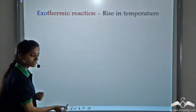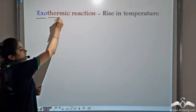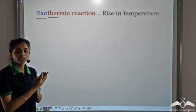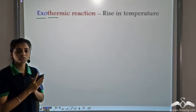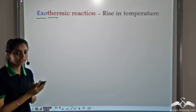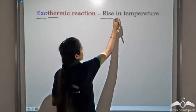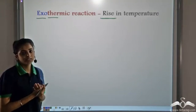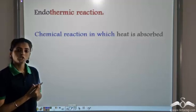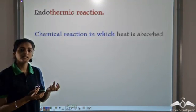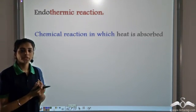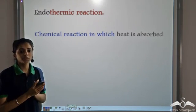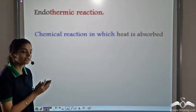In an exothermic reaction, heat is being released. As heat is given out, exothermic reactions are always accompanied by a rise in temperature. Now in some reactions, heat is absorbed. When energy or heat is absorbed for a reaction to take place, such a chemical reaction is known as an endothermic reaction.